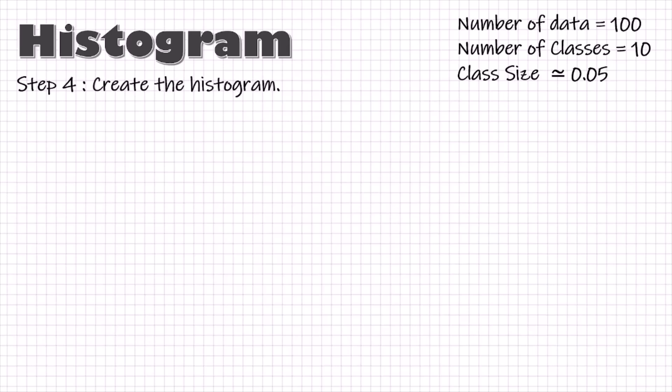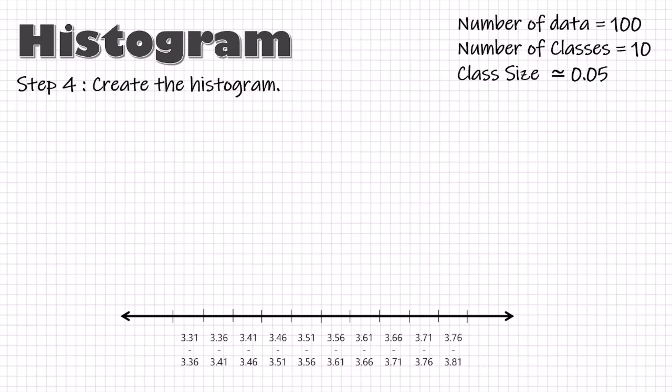Let's create the histogram now. On the x-axis, we will plot the classes. We have taken a class size of 0.05, but we do not know the starting point. There are two methods. Either take the minimum number, that is 3.31 as the starting point, which will make 3.36 as the endpoint of first class and then keep on adding 0.05 for further classes. Or, to make calculations simpler, we can create a class like 3.30 to 3.35 so that the minimum number falls in the first class and then keep on adding 0.05 for further classes till the class for the highest number is made.